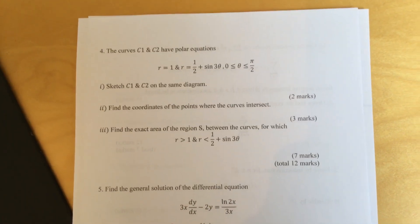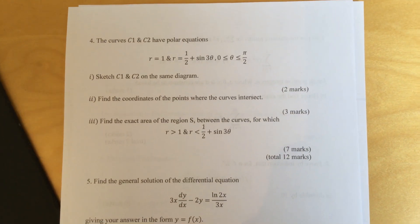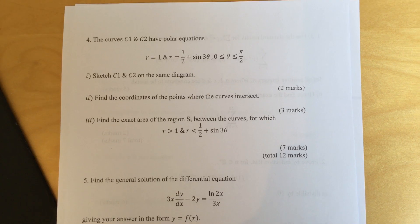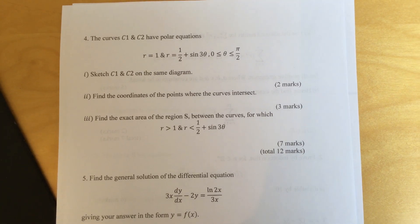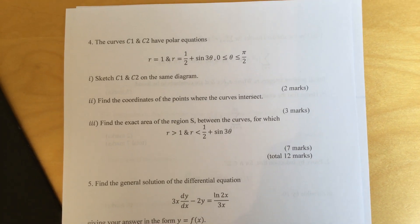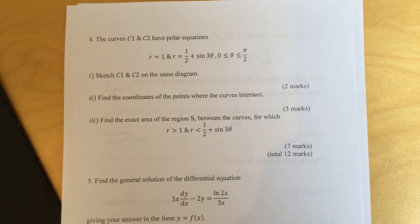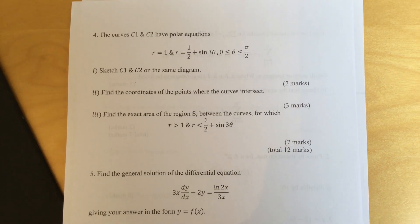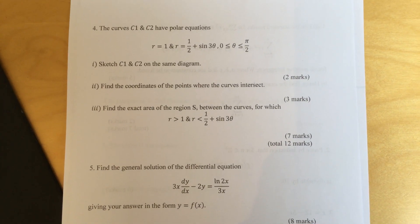Okay, those are the first three questions. Question four. The curves C1 and C2 have polar equations r equals 1 and r equals half plus sine 3θ, where θ is between 0 and π over 2. Part one, sketch C1 and C2 on the same diagram.